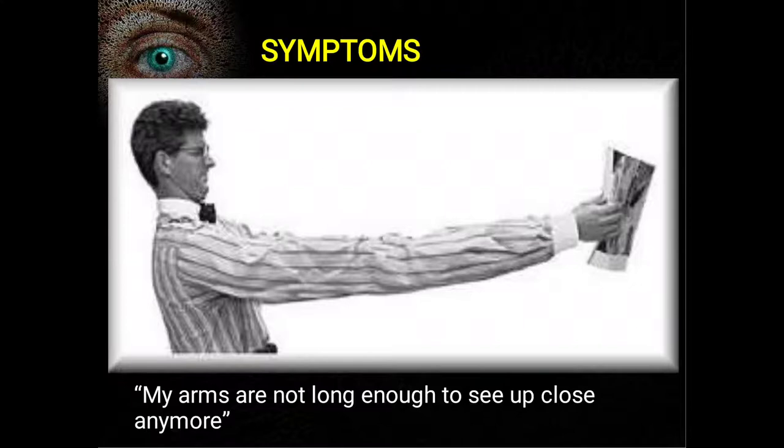The main symptoms: a person finds it difficult to read. Distance vision is perfect but near vision is affected — the patient cannot read a newspaper or mobile phone clearly and has to hold it far to read.